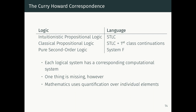That's very nice, but there's something missing. Each of these logical systems has a corresponding computational system, but we're missing something from ordinary everyday mathematics. Mathematics uses quantification over individual elements. We might have a theorem like: for all x, y, z, and n natural numbers, if n is greater than two, then x^n + y^n ≠ z^n — Fermat's last theorem. It's one of the highest achievements in mathematics, and it cannot be expressed in any of the type theories we've seen so far via the Curry-Howard correspondence.